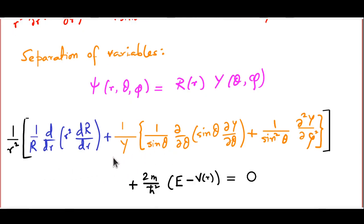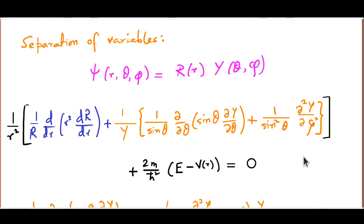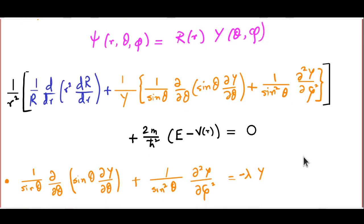As you can see, the part in orange depends only on theta and phi, and the rest depends on small r. This tells us we can separate this into two equations. This part will become a constant of separation, which I call minus lambda. We end up with a partial differential equation for capital Y — it is still not an ordinary differential equation yet, because Y is a function of both theta and phi. This is the partial differential equation which capital Y will obey.